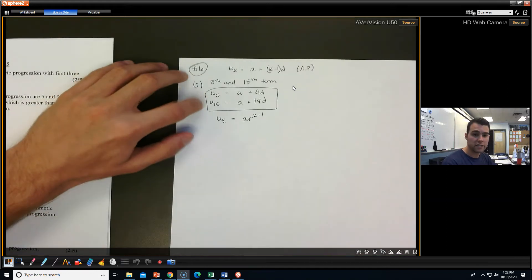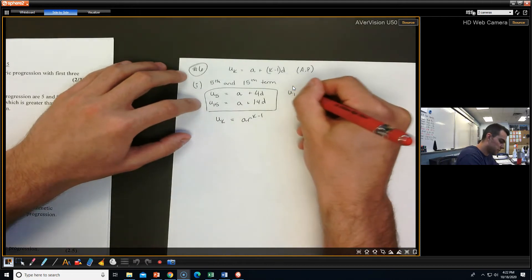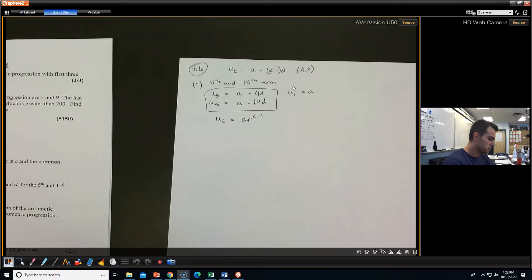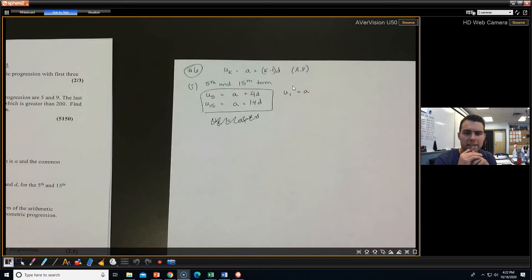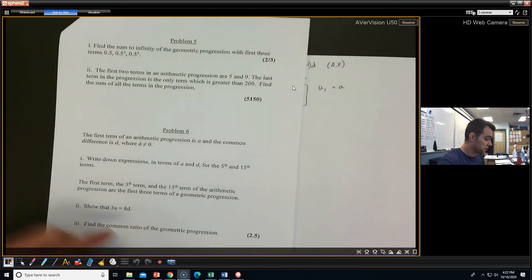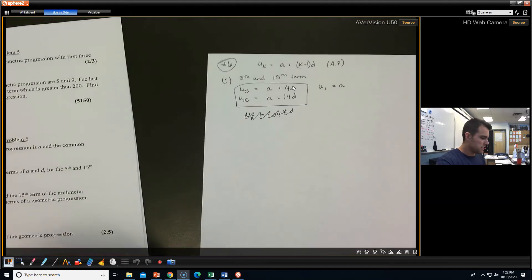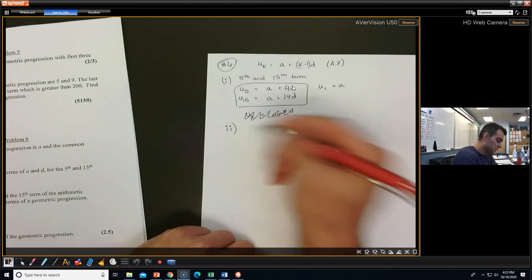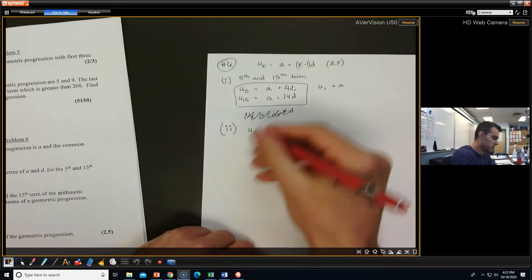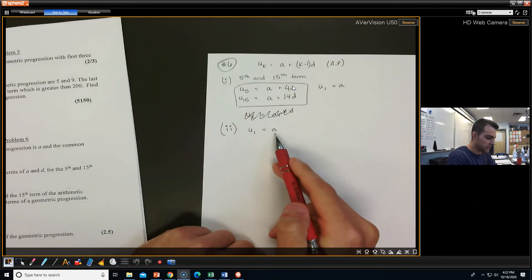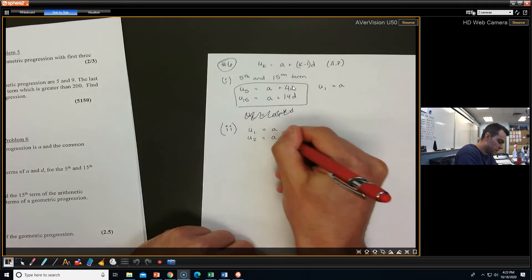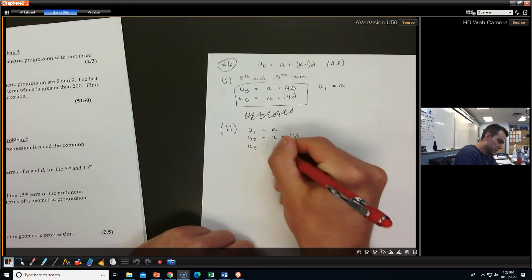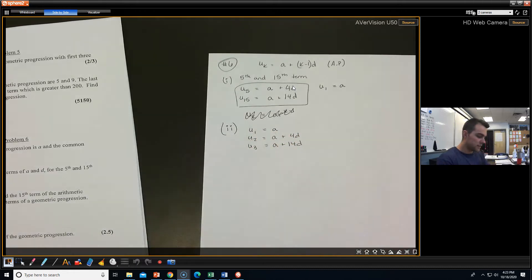Well, we have the 5th and the 15th, and then we also know what the first one is. That's just equal to A. So we might not actually need to use this guy that much. What comes in handy, though, is that it says that they're the first three terms of a geometric progression. So let's just write that stuff down real quick. We know that U sub 1 now, now we're with geometric, is going to equal A, the first term of the arithmetic progression. U sub 2 is going to equal the fifth term, which is A plus 4D. And the third is actually the 15th of the AP. So here's what we got to work with.